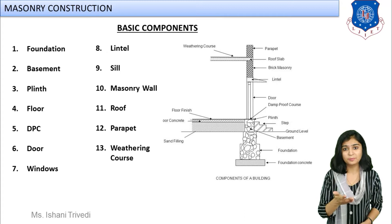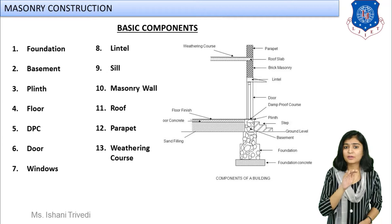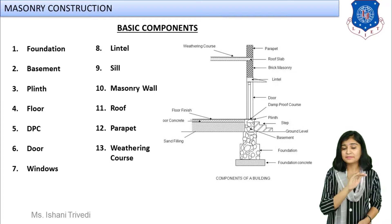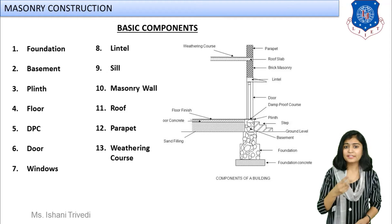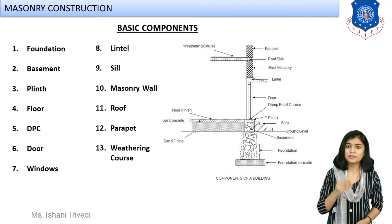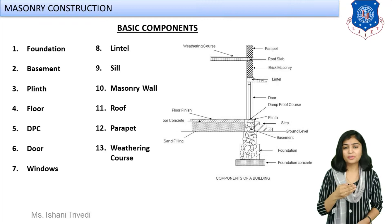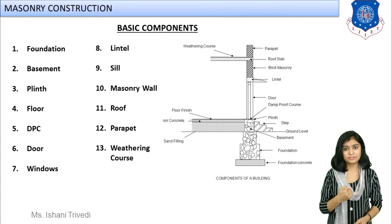Above the plinth level comes the lintel level. The level where your openings — doors and windows — end is your lintel level, and the level where your windows start is your sill level. So we have plinth level, sill level, and lintel level — generally provided across the openings of the structure, meaning doors and windows. Next we have the floor: the flat surface required for you to dwell and live. Different types of flooring will be studied in detail later.